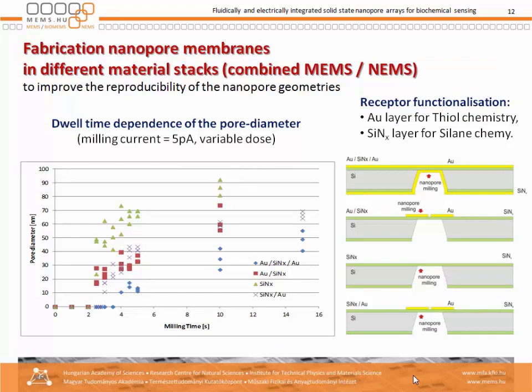The point is that we have to have gold inside the drilled nanopore, and this gold surface will be functionalized with the receptors. Here we use thiol chemistry; silane chemistry has been used also for silicon nitride layers, but that is not our main goal — although we tried both — and the dwell time dependencies are shown on the left side. However, we also have horizontal surfaces, and we only want to functionalize the nanopore, so those surfaces have to be covered and protected from functionalization.